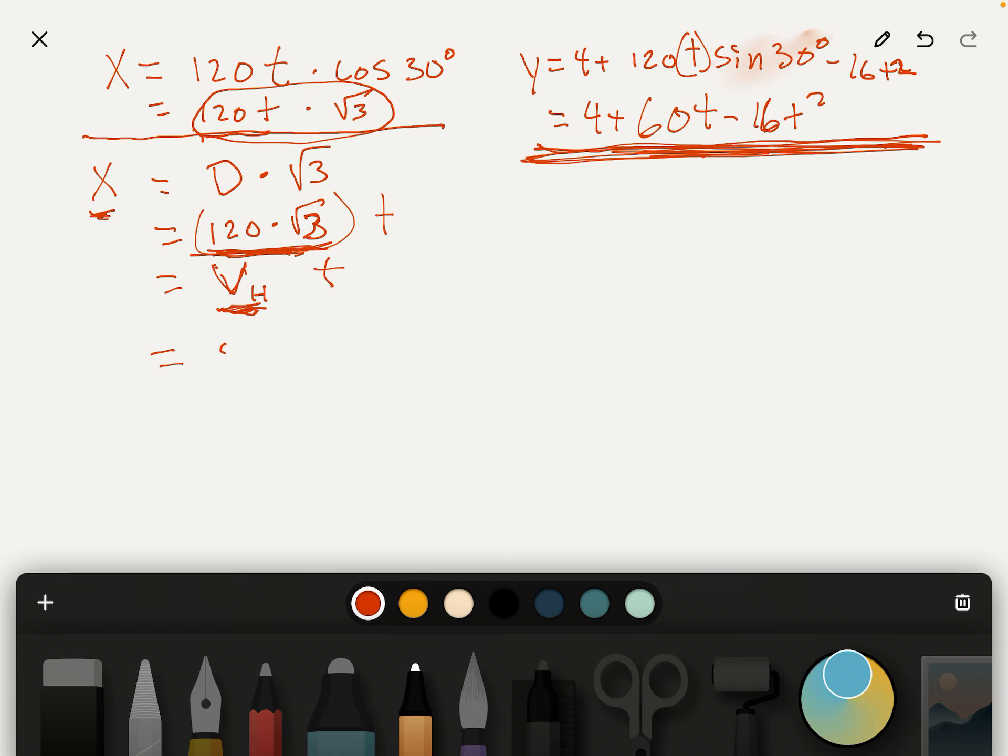So it's five plus 120 times the square root of three, multiply all of that by T. And again, x equals 350, so T equals 350 divided by five plus 120 square root of three, and you have the answer.